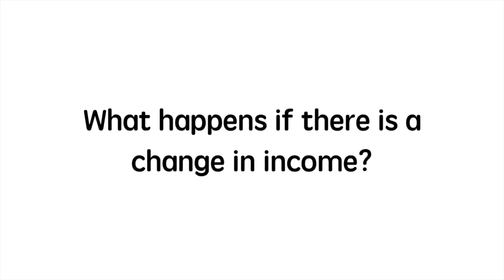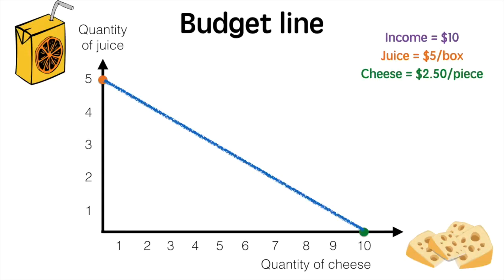Another question to consider is this: What happens if there is a change in income? Suppose income is reduced to $10. The budget line would shift inwards to correspond to the new maximum possible combinations. With $10, the consumer could purchase either 2 boxes of juice or 4 pieces of cheese. We represent that graphically with a new budget line shifted inwards.